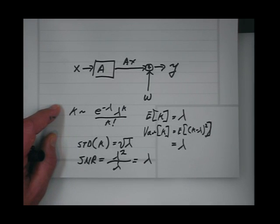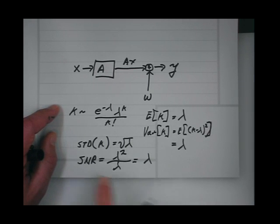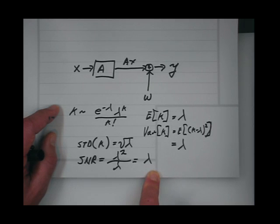Normally, the signal-to-noise ratio increases as the signal squared for additive Gaussian noise. But for a Poisson random process, the signal-to-noise ratio increases proportional to the signal — it's like the square root of the signal integration.